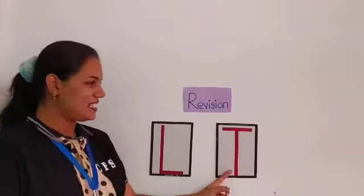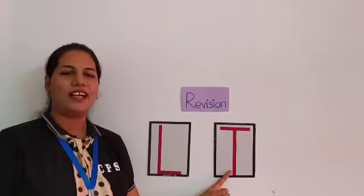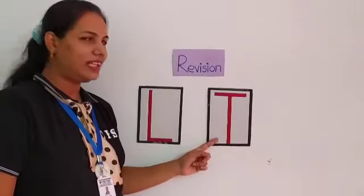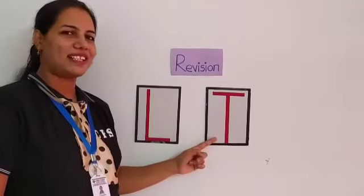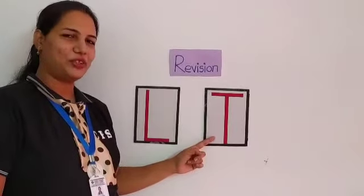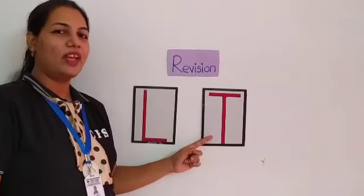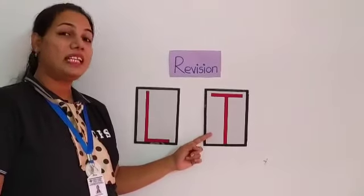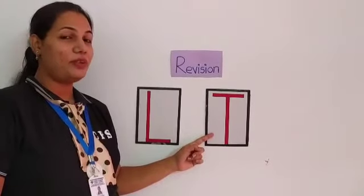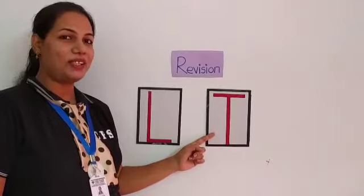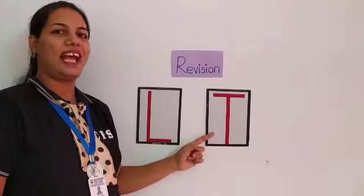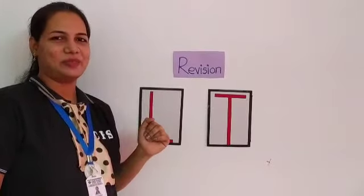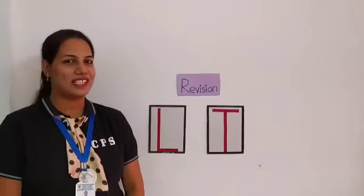And next letter is? Now this is letter T. Yes, correct. You remember it, hai na? T makes a sound, T. T se kya hota hai? Tiger. Correct.